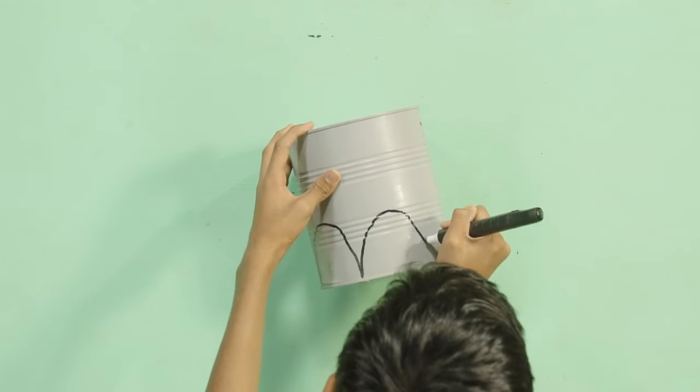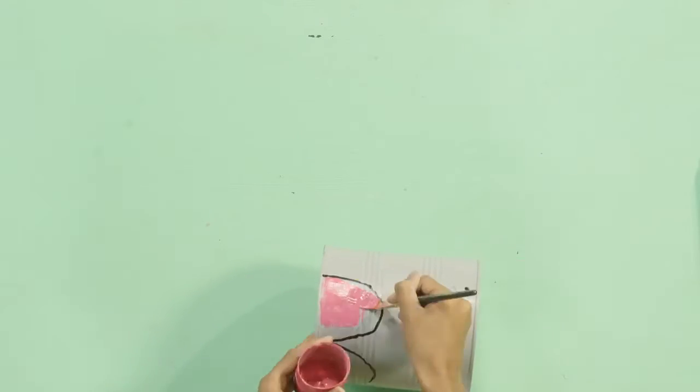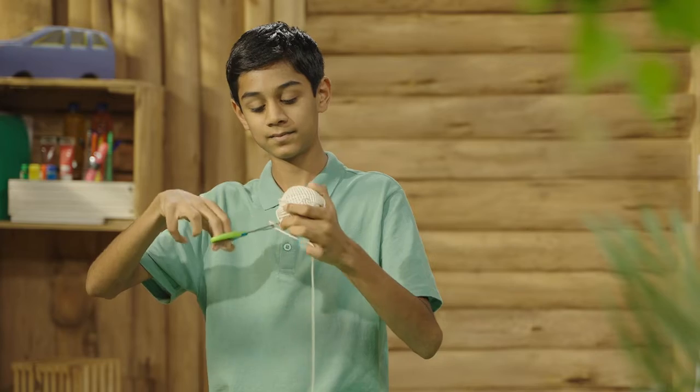Gonna get our black marker and go over them. Get the pink paint and paint inside the semi-circles.